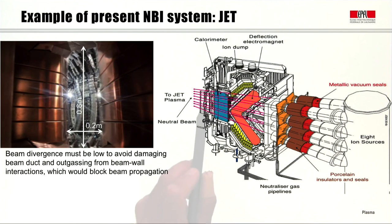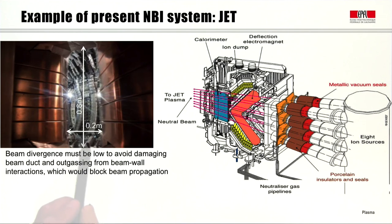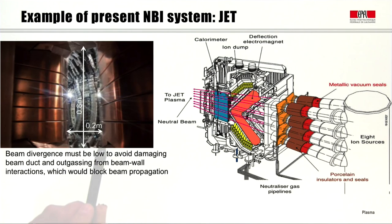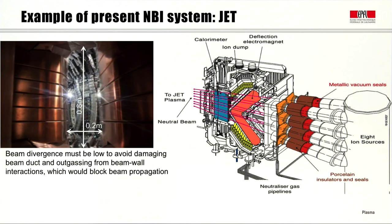The beam enters the JET plasma through a port about 20 cm wide and 80 cm high. The divergence of the beam is an important parameter: we cannot allow the beam to impinge on the walls of the duct leading to the machine, both because it would damage the duct and because any power deposited there causes significant outgassing from beam-wall interactions, which would then block propagation of the beam so that it never reaches the plasma volume.